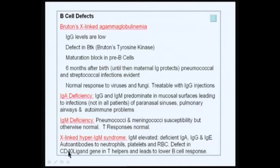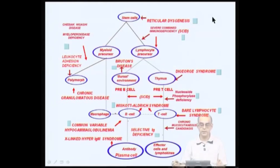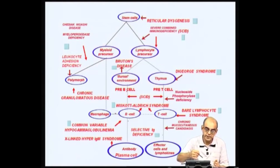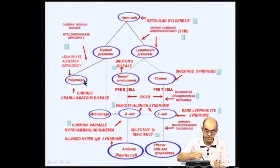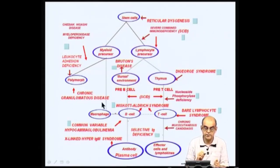Going back to the tree, having covered the lymphocyte lineage, let us see what diseases are associated with the myeloid pathway. The myeloid pathway is affected by diseases such as Chediak-Higashi disease, leukocyte adhesion deficiency (LAD), which affects neutrophils or polymorphs, and also chronic granulomatous disease (CGD).